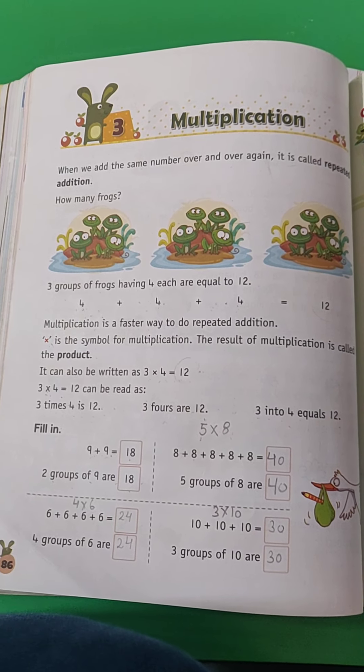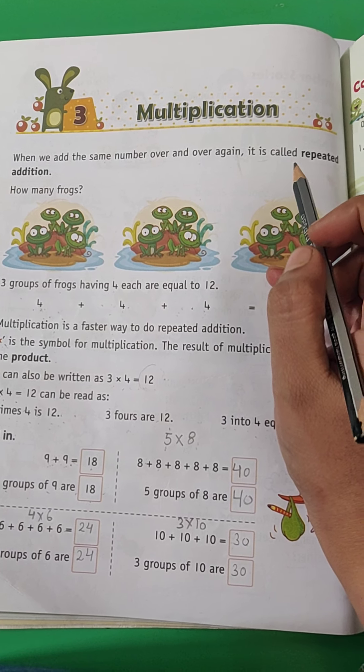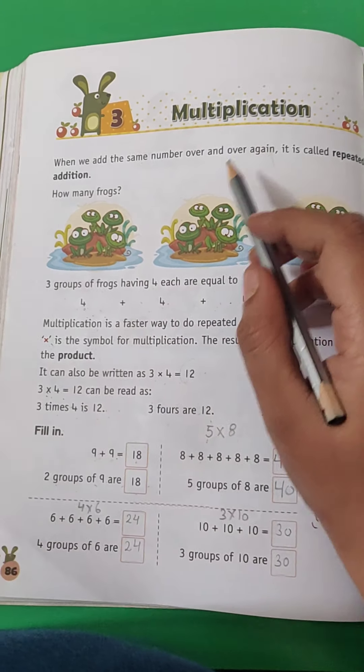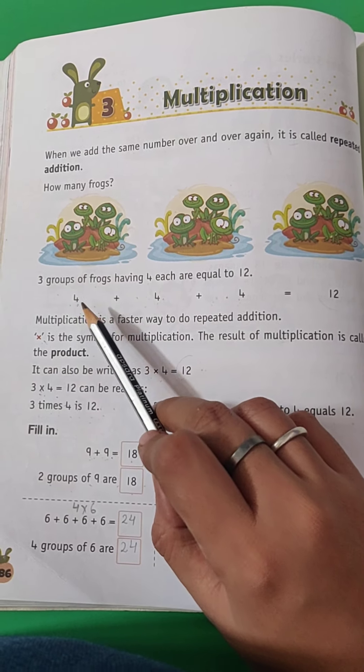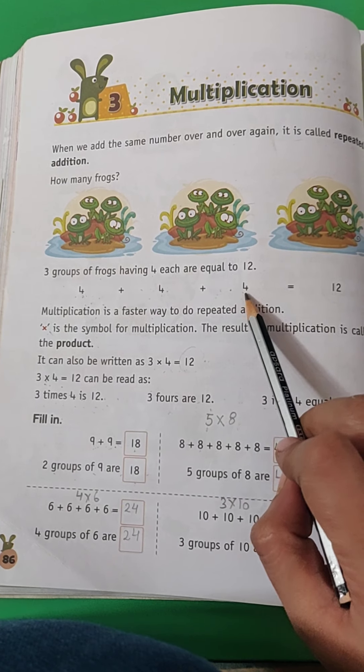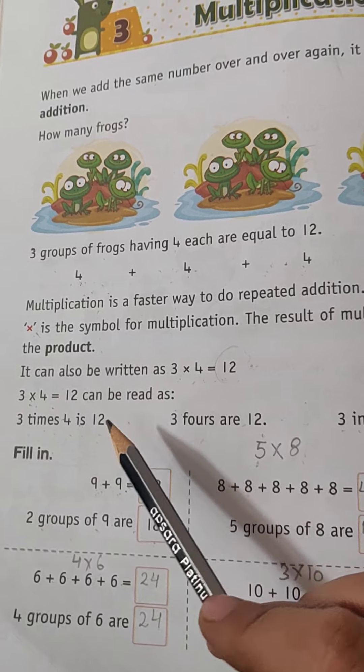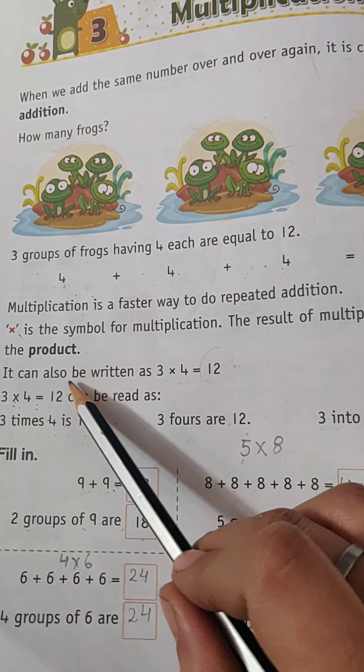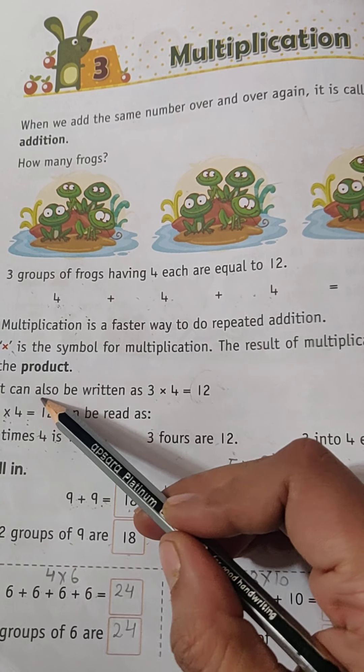So children, what is multiplication? Firstly, we have to understand why we do multiplication - to avoid repeated addition. What is repeated addition? When you add the same number again and again. So here, instead of adding the number again and again, we can just do multiplication like three into four to get the answer.